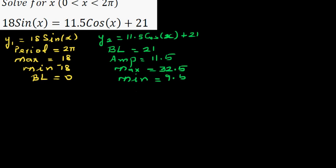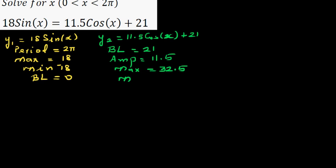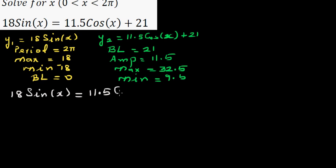We want to solve for x between 0 and 2 pi, and we know graphically the solution is going to be between 0 and 2 pi. The equation is 18 sin x equals 11.5 cos x plus 21. The big problem is you have both sine and cosine — you have to write everything in terms of either sine or cosine.